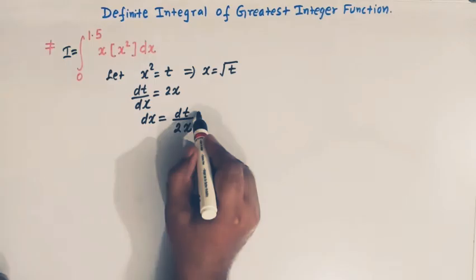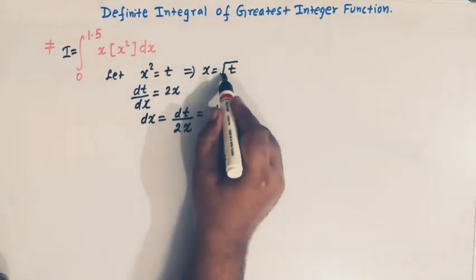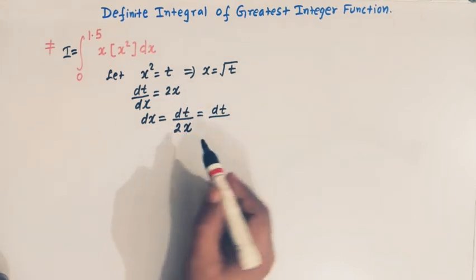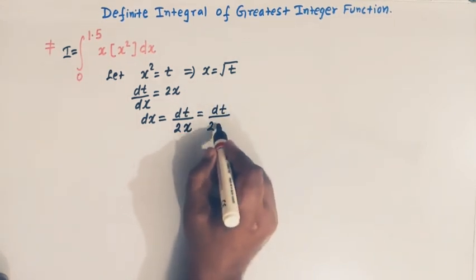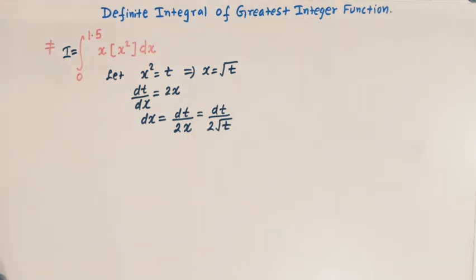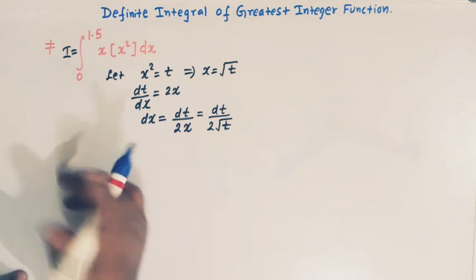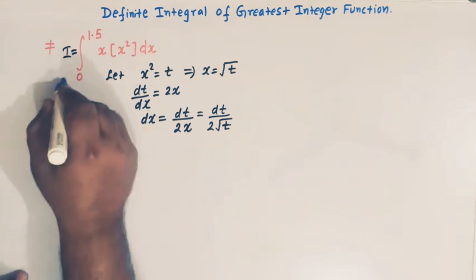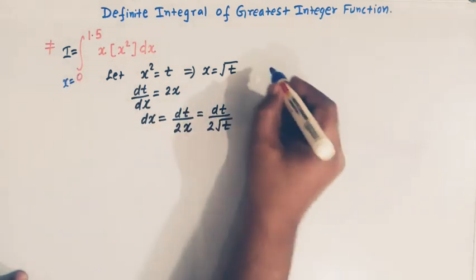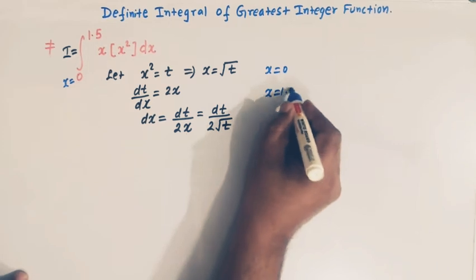Now we can write square root of t for x, so the denominator becomes 2 times square root of t. Now let us change the limits. The limits are from x equal to 0 to x equal to 1.5.